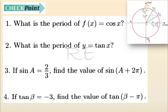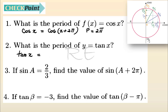Checkpoint: What's the period of cosine x? Cosine x is equal to cosine of x plus 2 pi — x plus a full revolution. So the period of cosine is 2 pi. What's the period of y equal to tangent x? If we go half a revolution from the first to the third quadrant, we get the same tangent. So tangent x equals tangent of x plus pi, and the period is pi.